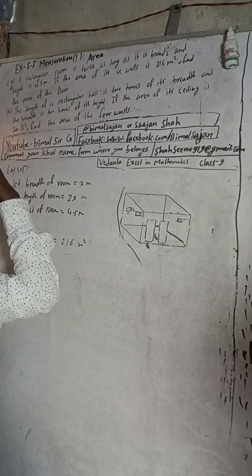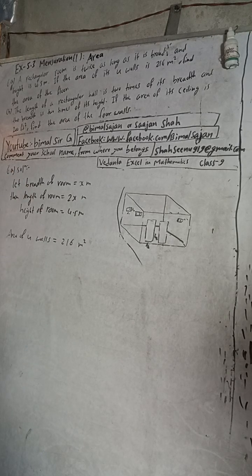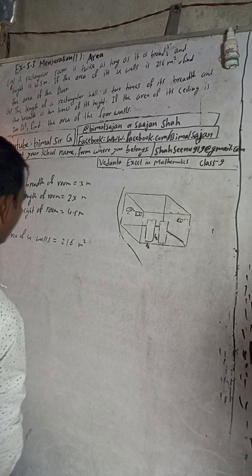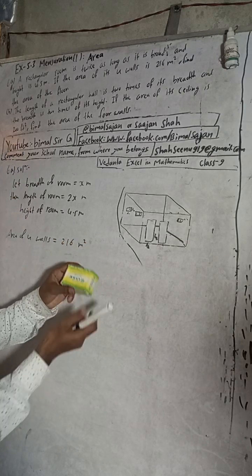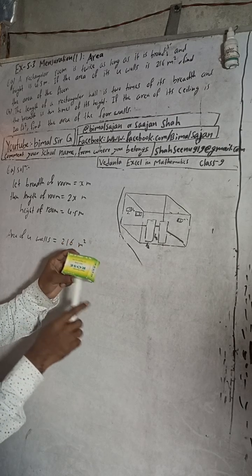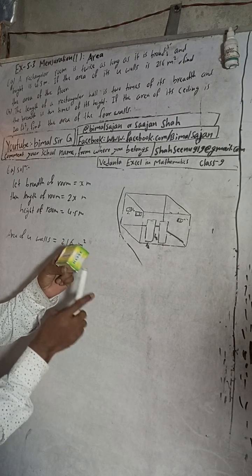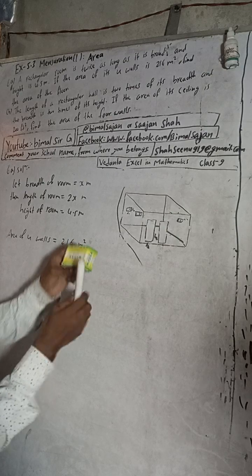What is the area of four walls? Suppose this is a room. The area of four walls means this is length, this is breadth, and this is height.